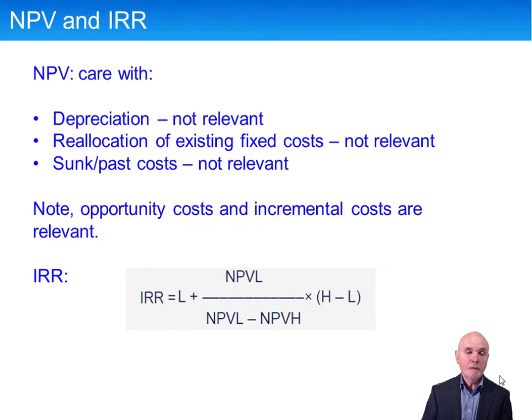First of all, remember that when you are working out net present value, this is based on cash flows. So depreciation is not relevant, that is not a cash flow. Similarly, if there are reallocated existing fixed costs, that is not an incremental or an additional cash flow, that would be irrelevant. And similarly, sunk costs are past costs. Costs that have been already spent, they're gone, they can't be in any way controlled, they're irrelevant to the calculation.